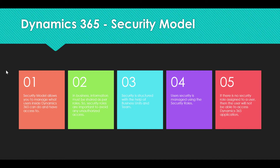Third, security is structured with the help of business units and teams. Fourth, user security is managed using security roles. Every user is assigned one or more security roles based on their jobs and responsibilities, and they can perform only those actions which are in their security role. Fifth, if there is no security role assigned to a user, then the user will not be able to access the Dynamics 365 application. At least one security role has to be assigned to the user for them to be able to access Dynamics 365.